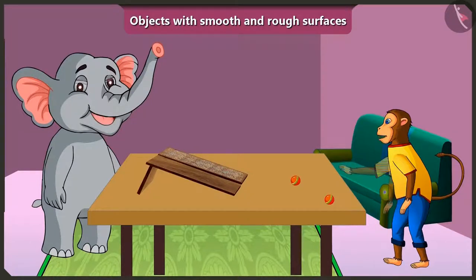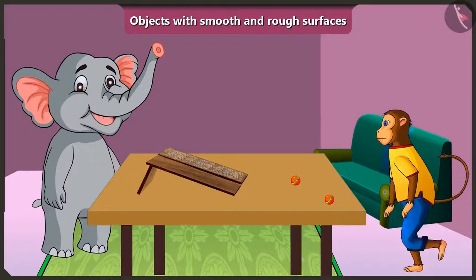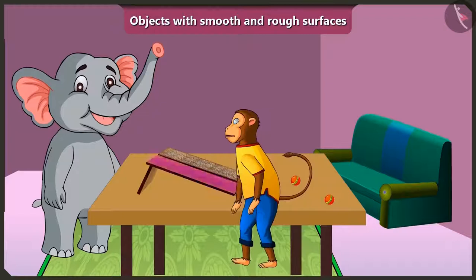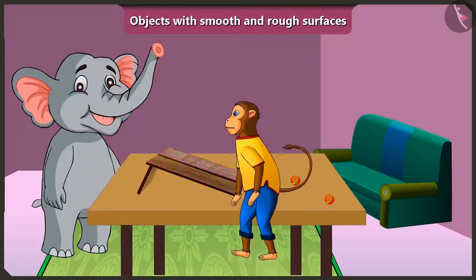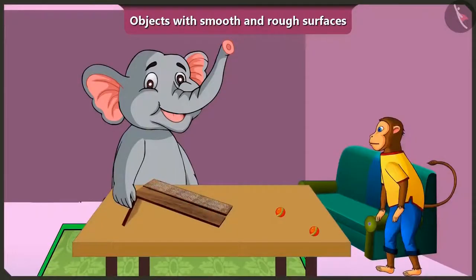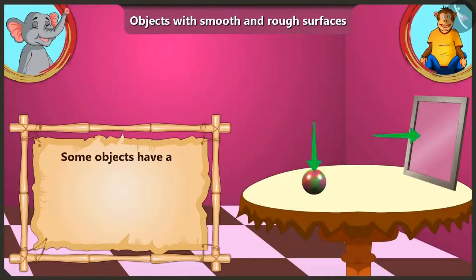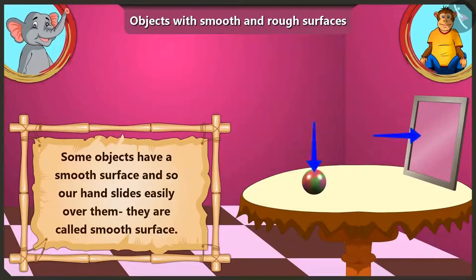Hey Appu, your balls are similar, but the surface of these wooden planks is not the same. Look at this surface — our hands slide smoothly and easily on things which have a smooth surface. We also call them smooth-surfaced. My hand is sliding on this — its surface is very smooth. The surface of few things are smooth, so our hand easily slides on them. This is called a smooth surface.